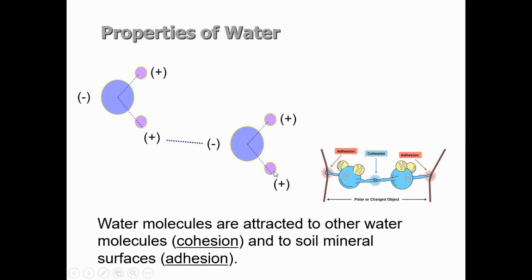When water molecules are attracted to one another, the negative oxygen side is attracted via a hydrogen bond to the hydrogen side of another molecule — this is called cohesion. Water is also able to attach to surfaces, which is due to adhesion forces. So cohesion is water-molecule-to-water-molecule attraction, and adhesion is the interaction between water molecules and a surface. Because of this, if you put water in a cup and look at it, you will notice a curved shape at the surface — a meniscus — which is caused by adhesion.